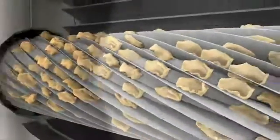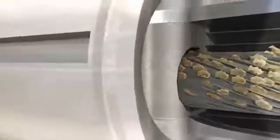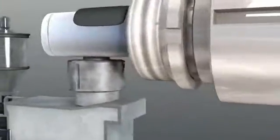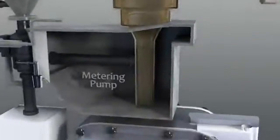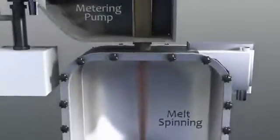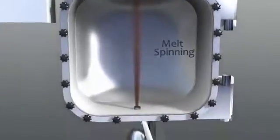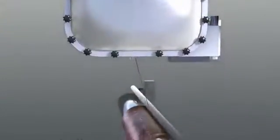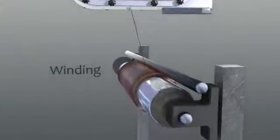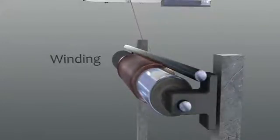The molten lignin feeds into a metering pump, then through an extrusion die creating very fine filaments that solidify and are wound onto a spool. The combination of extrusion die hole diameter and winding speed determines the final diameter of the lignin filaments.